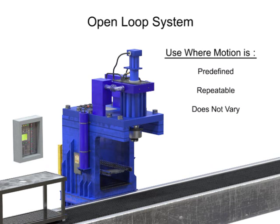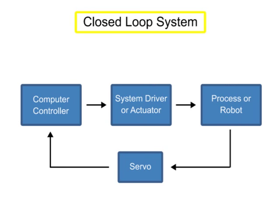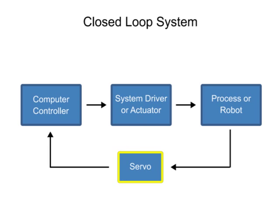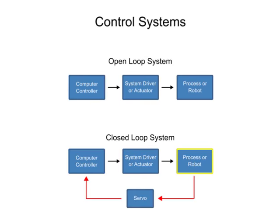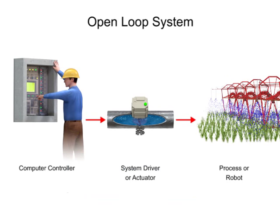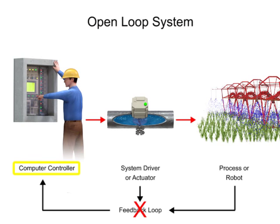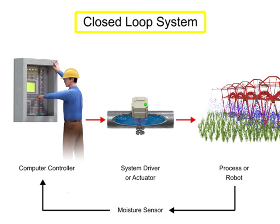The second type of control system is called closed-loop control or servo control. A servo is a device that uses error-sensing feedback to control the motion of another device. The primary difference in an open versus closed-loop system is the addition of a feedback loop that allows the controller to make adjustments to the robot. In our previous example of a sprinkler, the system was open-loop because the controller received no feedback. But if a moisture sensor is added, it becomes a closed-loop system.